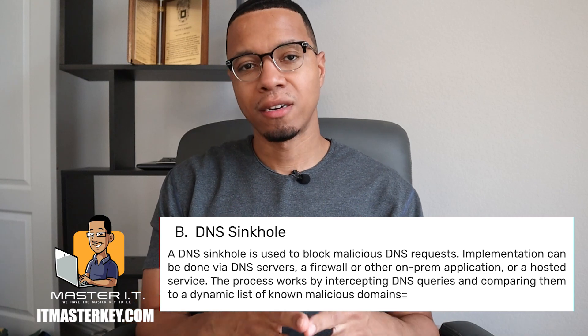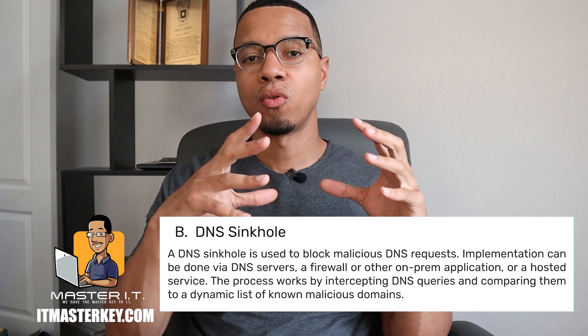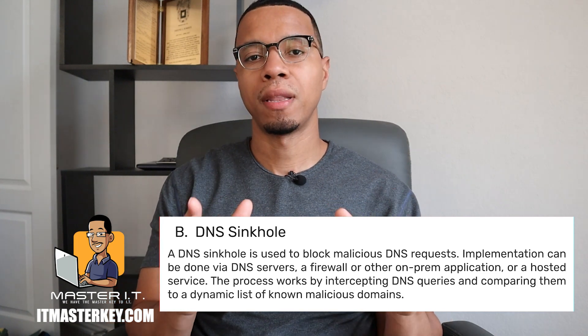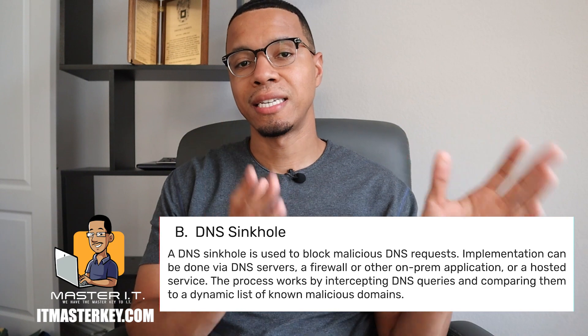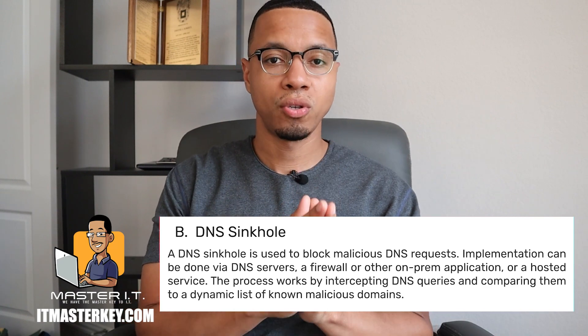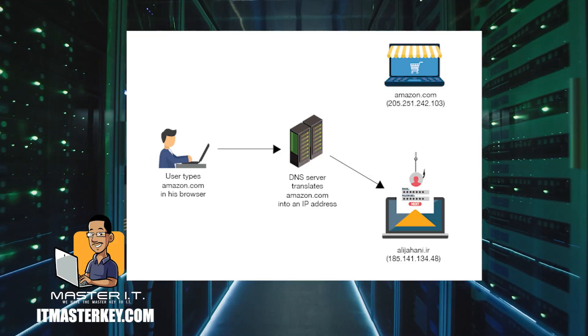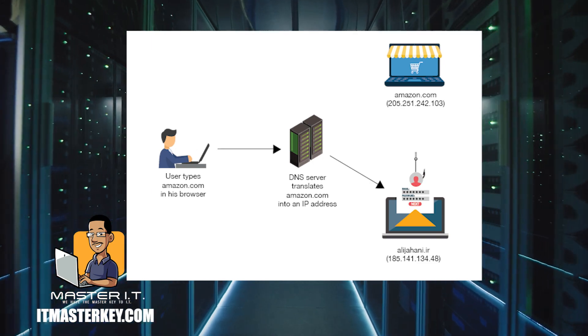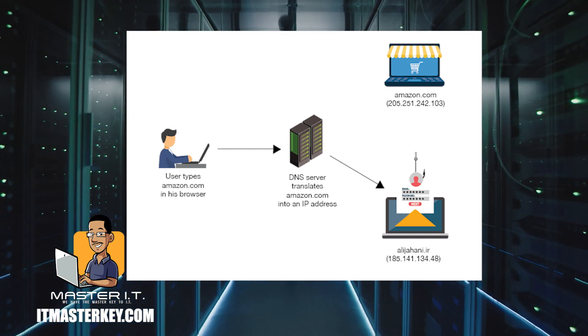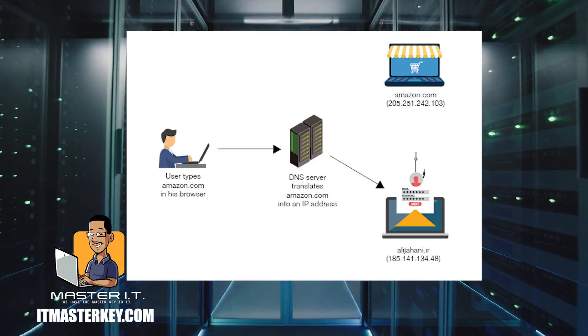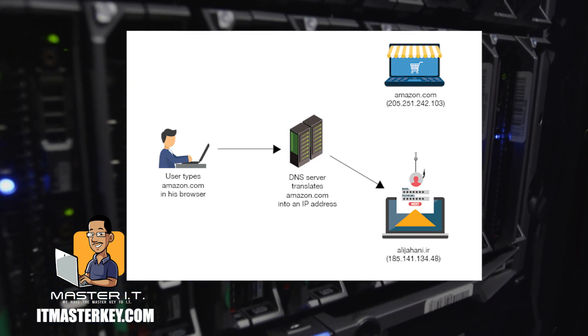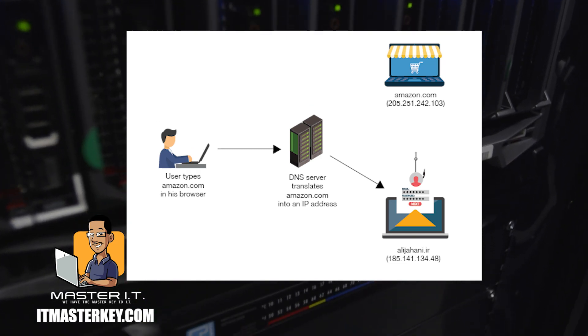A DNS sinkhole is kind of like a black hole for malicious requests. If a request is coming from a malicious place, it gets sent to the DNS sinkhole rather than being routed to an actual server doing legitimate work — it's routed to the sinkhole, which goes absolutely nowhere. A DNS sinkhole is used to block malicious DNS requests. Implementation can be done via DNS servers, a firewall, or other applications or hosted services. The process works by intercepting DNS queries and comparing them to a dynamic list of known malicious domains.